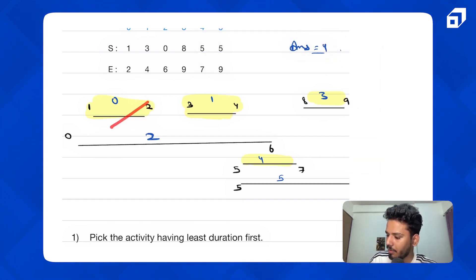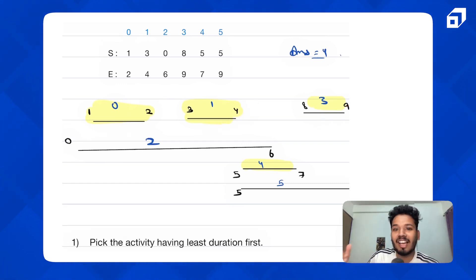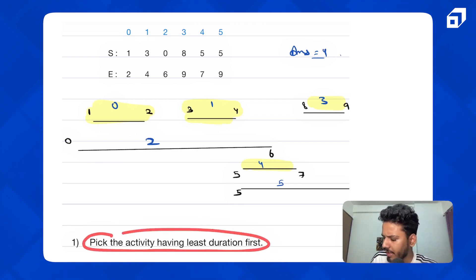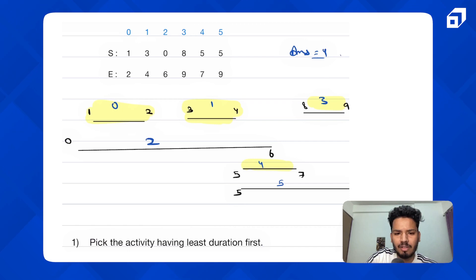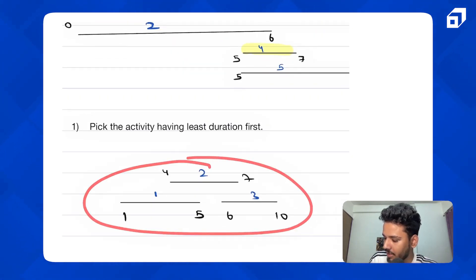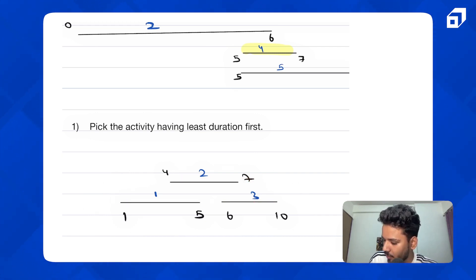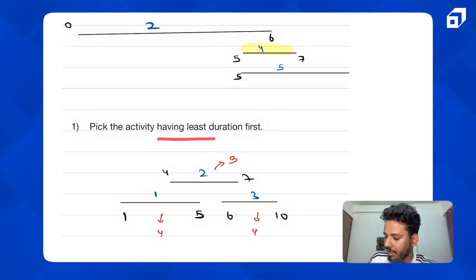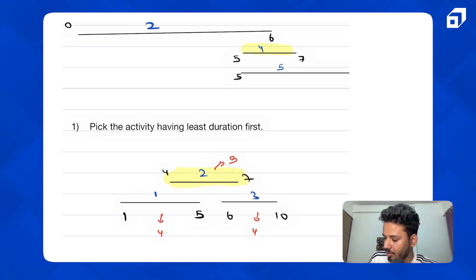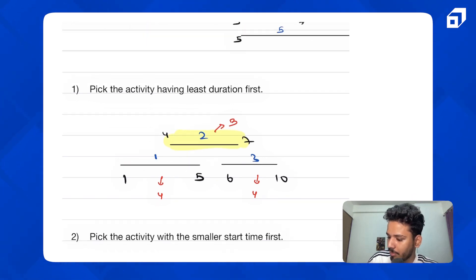Whatever order you pick, you cannot do more than four activities. Now, since this is a greedy question, the first idea that comes to mind is: pick the activity with the least duration first — the shortest activity you complete first, then move on. But consider a counterexample — if one activity takes three units and two others together also fit — picking the shortest one blocks the other two, giving only one activity instead of two. So this approach is wrong.